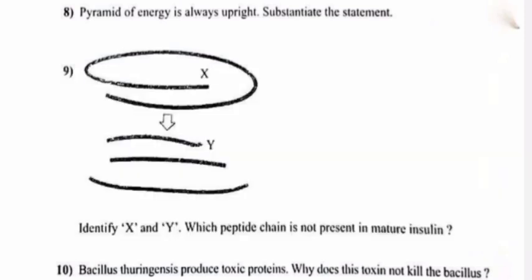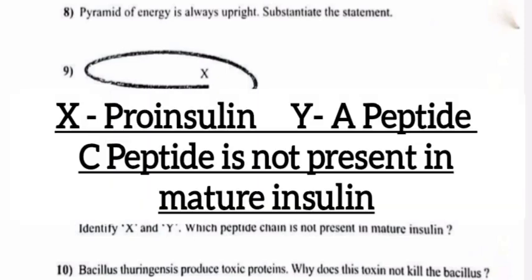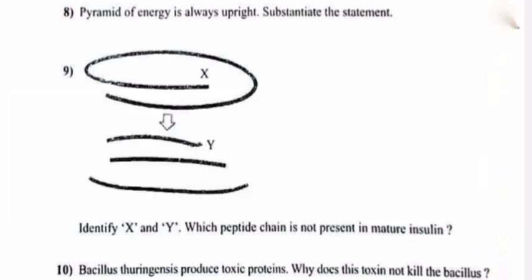Question 9: Identify X and Y. Which peptide chain is not present in mature insulin? Answer: X is proinsulin, Y is A peptide. C peptide is not present in mature insulin.